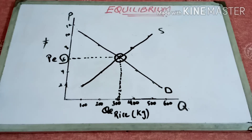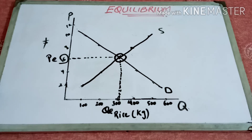Assalamu alaikum everyone and welcome to my channel Scarier Knowledge. In our previous lecture we discussed equilibrium — how it is derived, what the demand and supply curves are, and how we plot the equilibrium on the basis of the supply curve and the demand curve. Today we would discuss what happens if this equilibrium gets out of balance, which in general language is called disequilibrium.